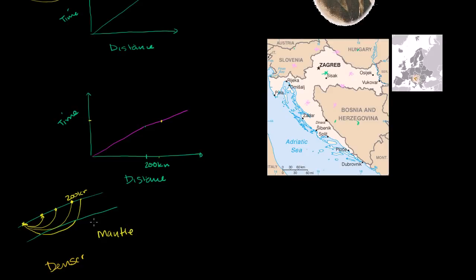The boundary between what we now know to be the crust and this denser layer — the mantle — is actually named after him. It's called the Mohorovicic discontinuity, and sometimes it's just called the Moho for short. This boundary between the crust and the mantle is now named for him. If you do the math, under continental crust, that denser layer is about 35 kilometers down.